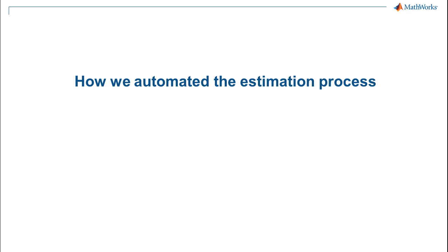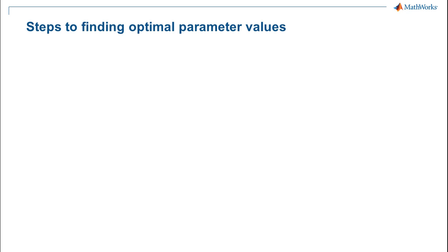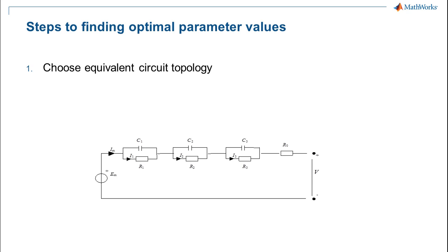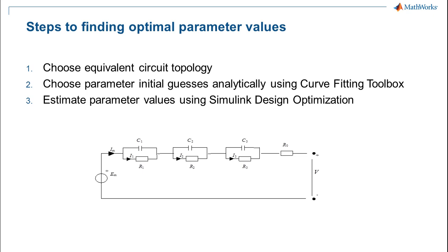Let's talk about how we automated the parameter estimation process. There are three main steps we used in finding the optimal parameter values. First, we needed to choose the best equivalent circuit topology. We needed to figure out how complex the model should be given our data. Second, we needed to find good starting points for the parameter values we wanted to estimate. We'll show you how we used an analytic solution to find those automatically. And third, we performed a full layered and automated estimation process using Simulink Design Optimization to find the best overall solution.